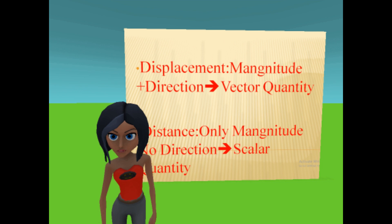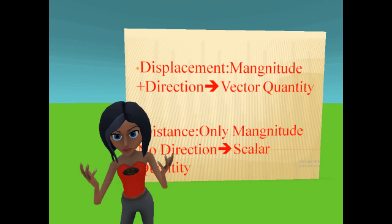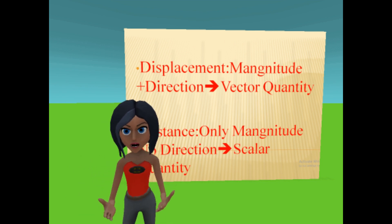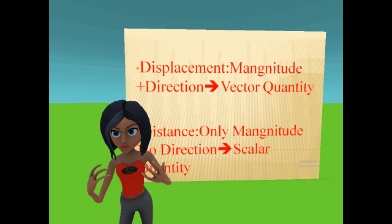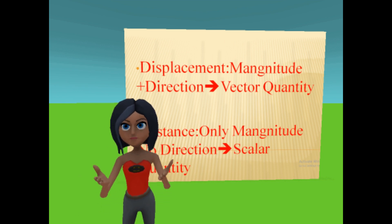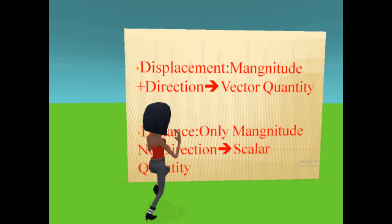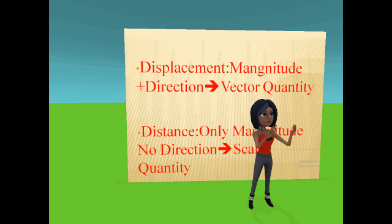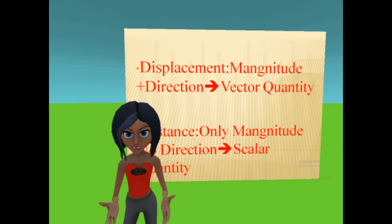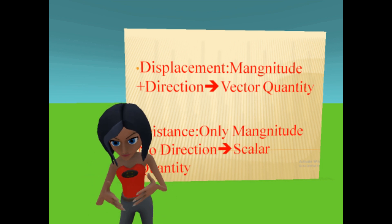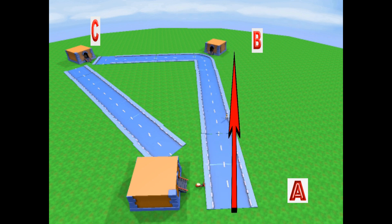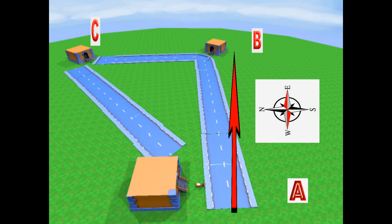Another interesting property of displacement is that it has direction along with magnitude. Any quantity which has both direction and magnitude is known as a vector, so displacement is a vector quantity. Distance, on the other hand, has only magnitude and no direction — any such quantity is known as a scalar, so distance is a scalar quantity. Going back to our example, when you reach town B from town A, distance is AB in magnitude and displacement is AB in the east direction.